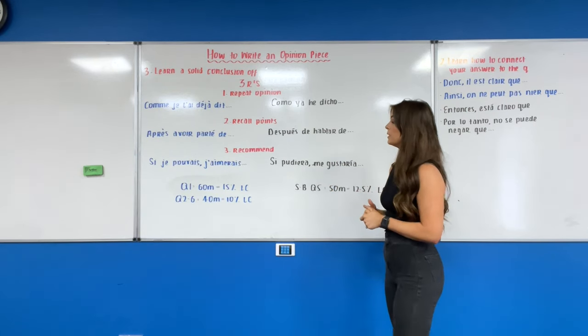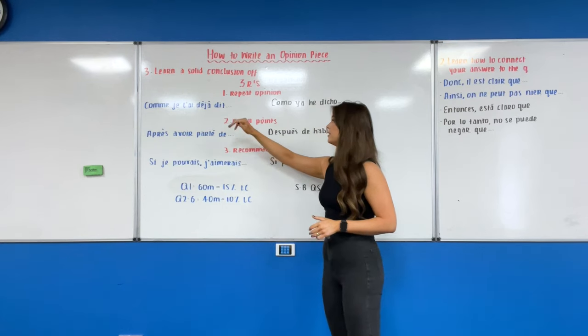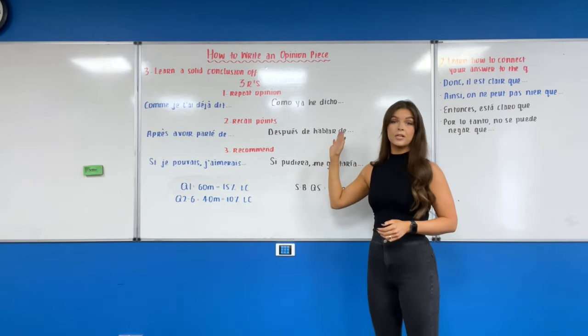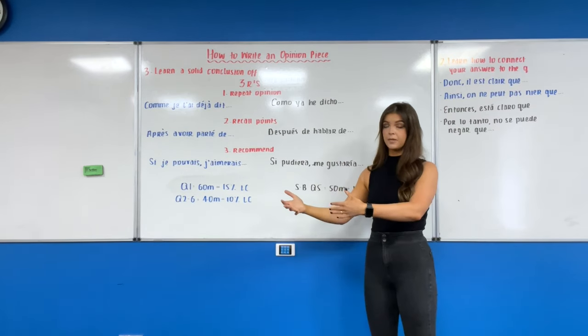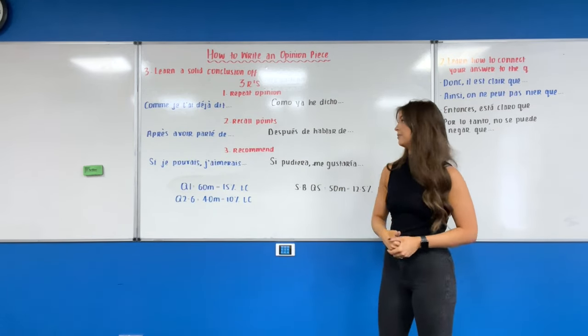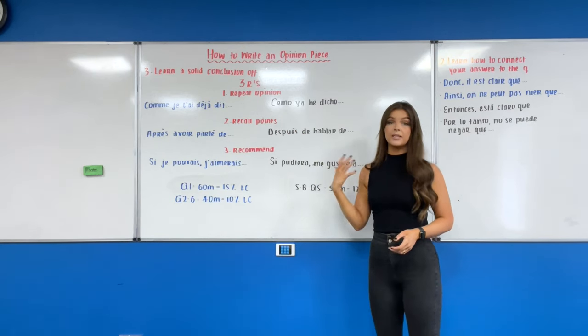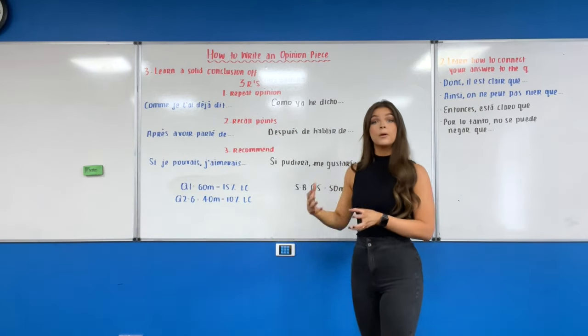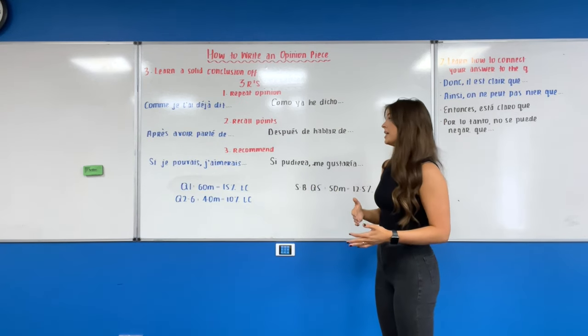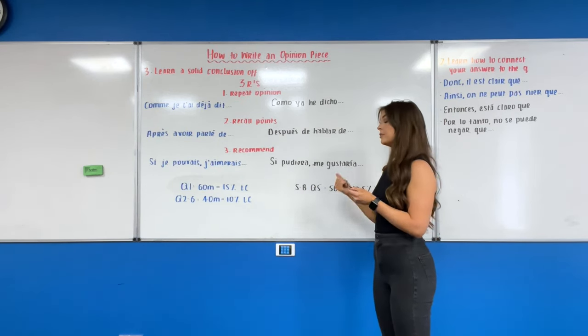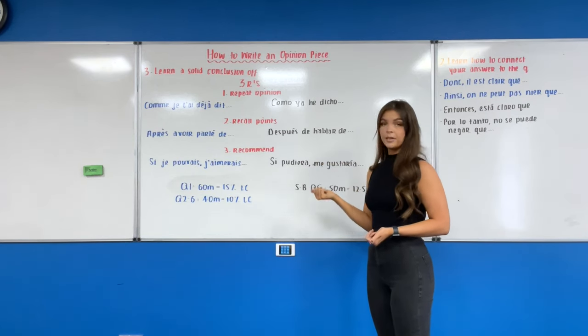Starting off with repeating our opinions, we're going to follow this structure. Both of those just translate as 'as I've already said.' And then you're obviously going to repeat your opinion, whether you agree or disagree or have mixed thoughts. Following on from that then we are going to recall our points. We're going to try and remind the examiner what it is that we spoke about or what it is that determined our opinion of this question. We have 'after having spoken about,' or they have 'later after speaking about.'